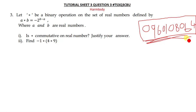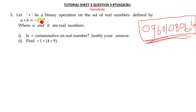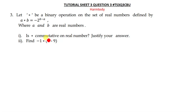Let's get into serious business. The question says: let ★ be a binary operation on the set of real numbers defined by a★b = (-2) raised to the power (b minus a), where a and b are real numbers. The first question is: is ★ commutative on real numbers?